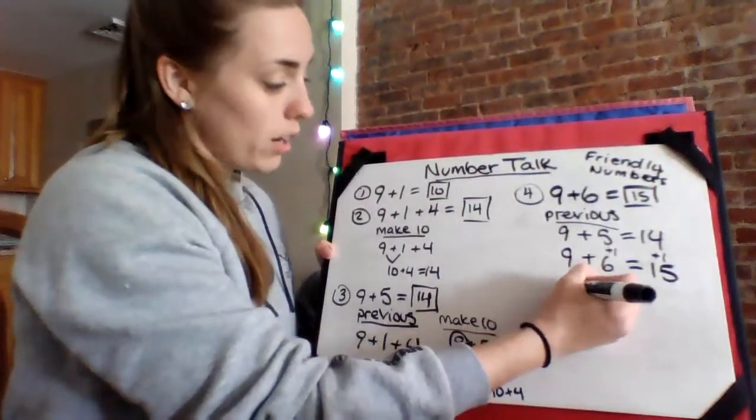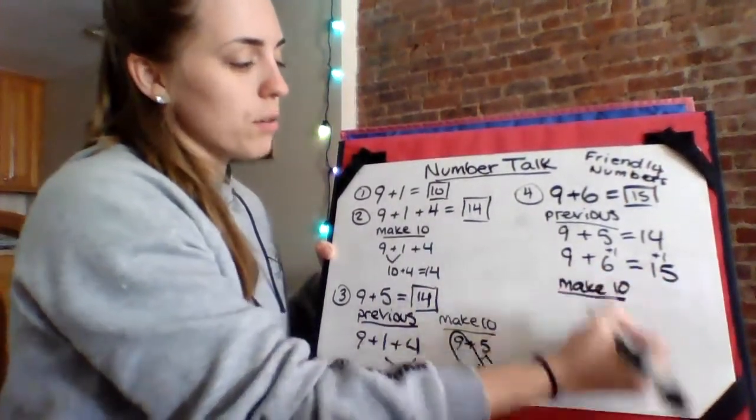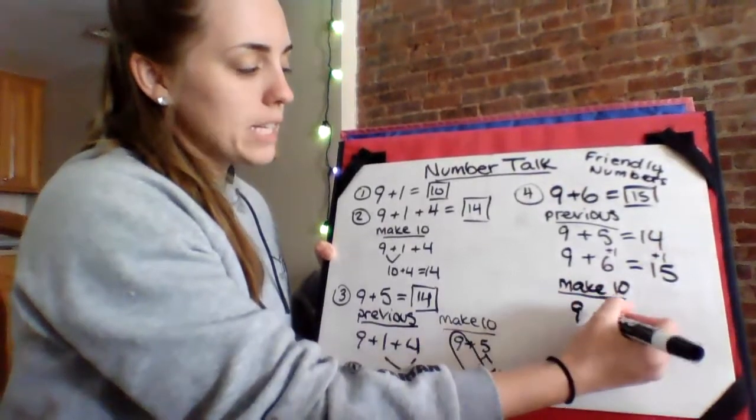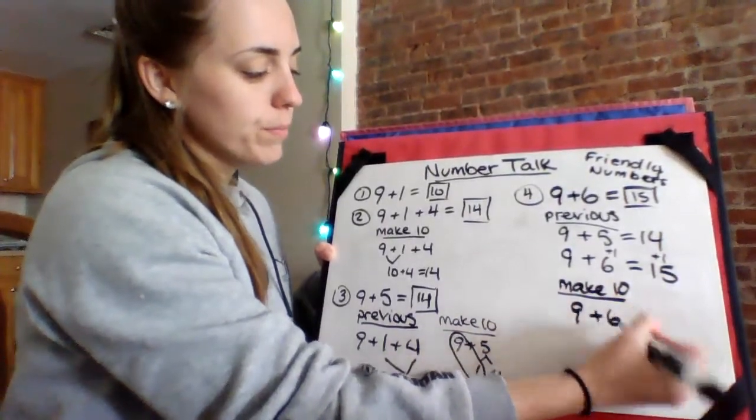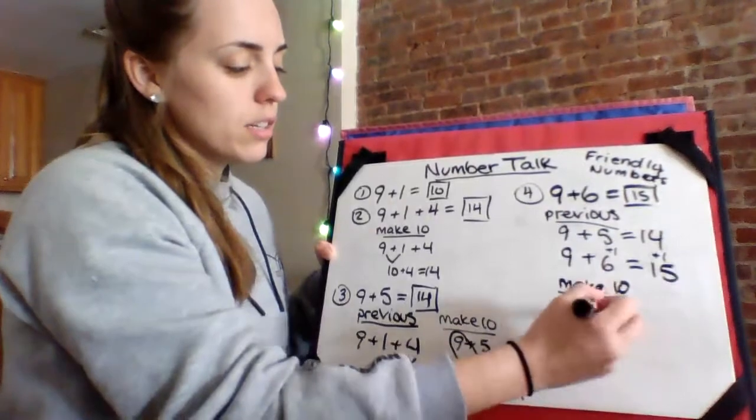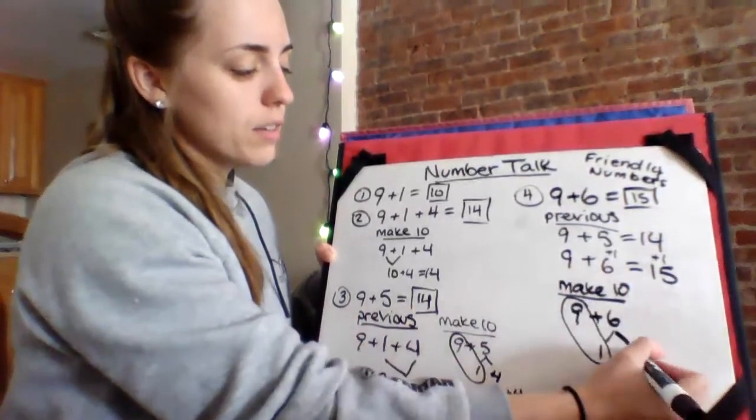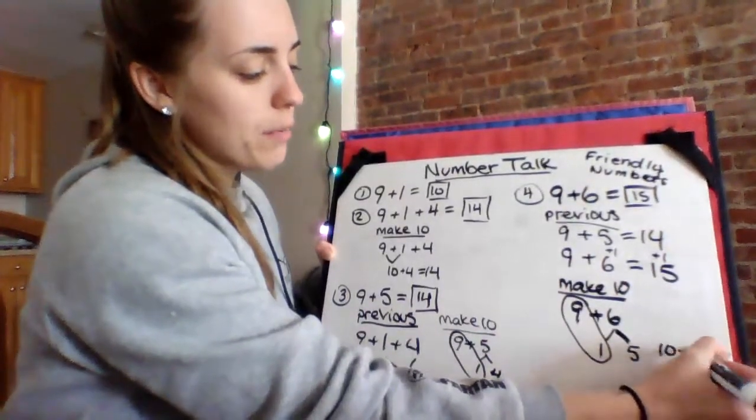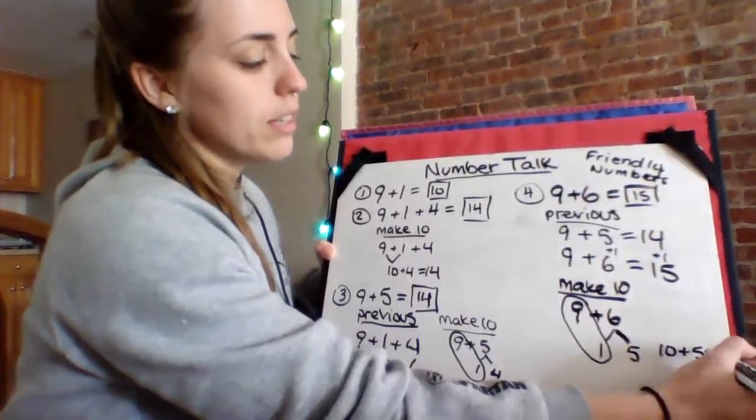We also can make a ten. Again, if your brain thinks this way, by decomposing the six. You give one over to the nine. We have five left. And we know ten and five is fifteen.